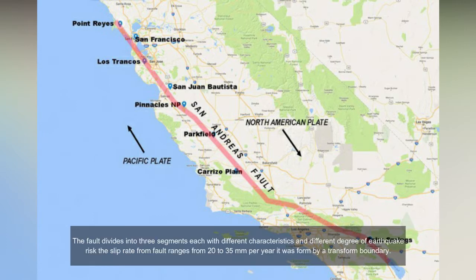The fault divides into three segments, each with different characteristics and a different view of earthquake risk. The slip rate along the fault ranges from 20 to 30 millimeters per year. It was formed by a transform boundary.